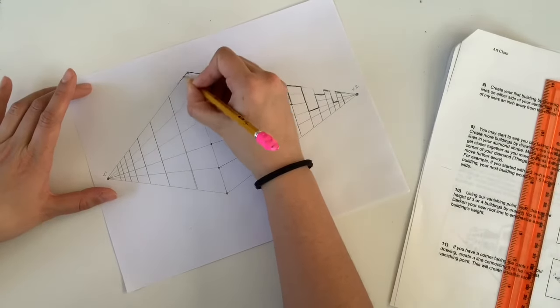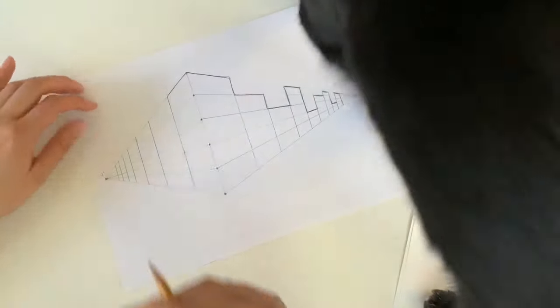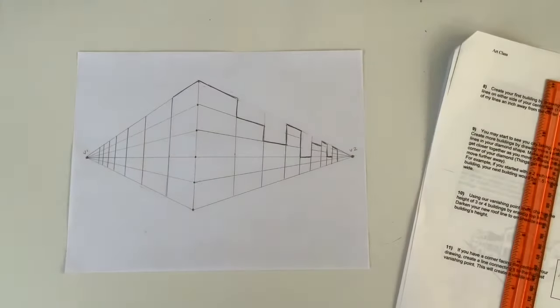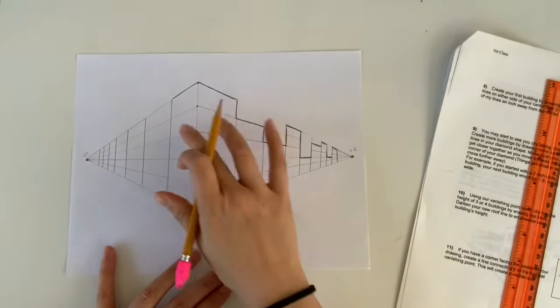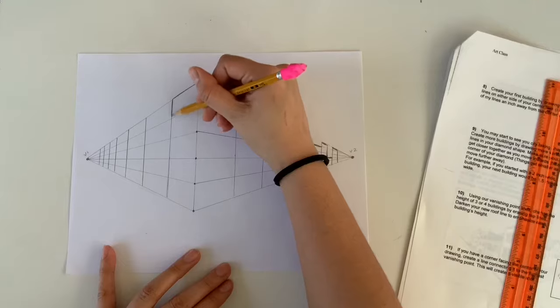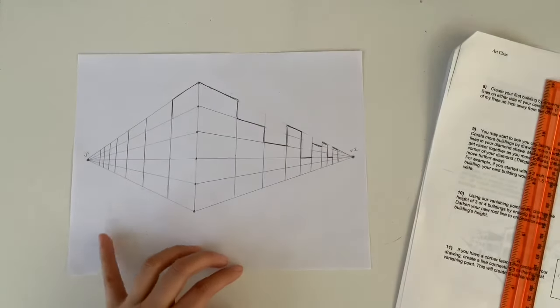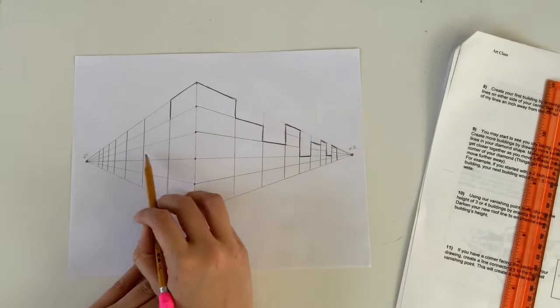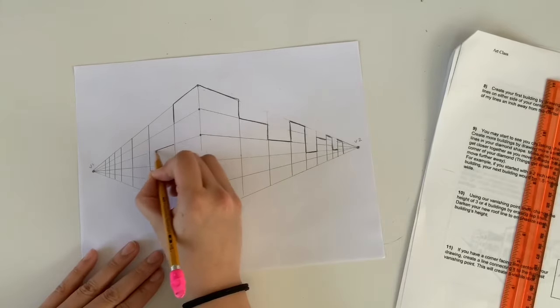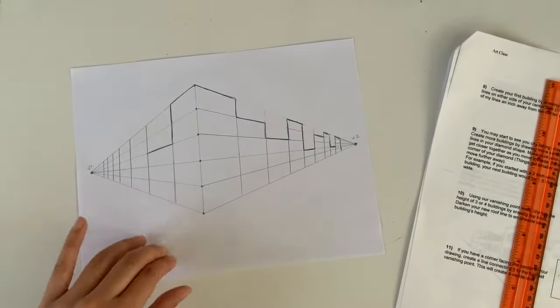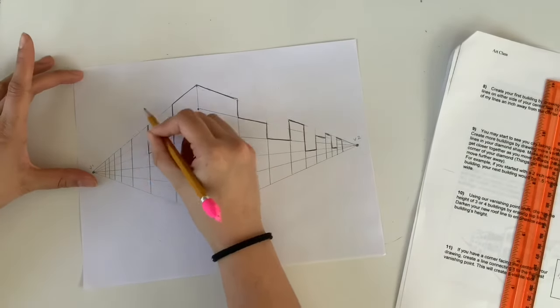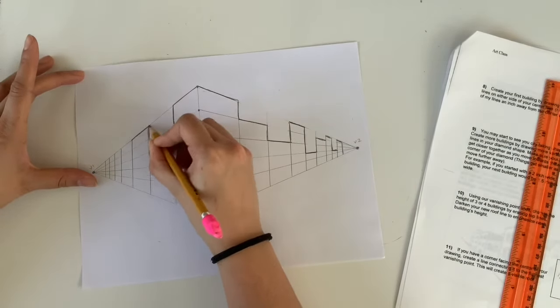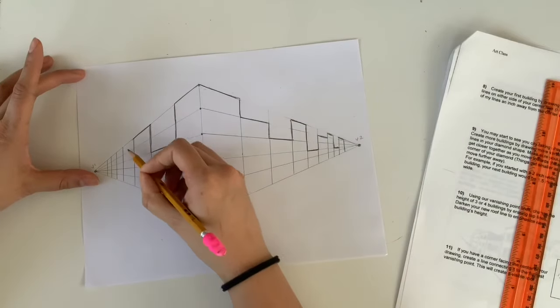The only building that has to match is the one that—oh we have a visitor, this is my cat Kylo I guess he wants to draw too, all right buddy—so as I was saying the only building that has to match on both sides is that center building because it is attached. All of your other buildings could be completely different heights from the other side so maybe this one will be three stories and then I will do my next building, this will be another five-story building and you're gonna carry that down all the way to your vanishing point one.